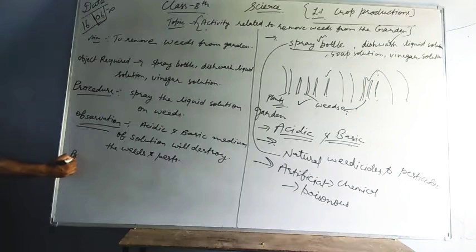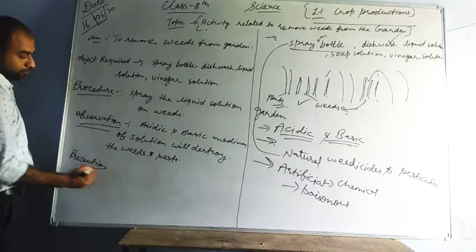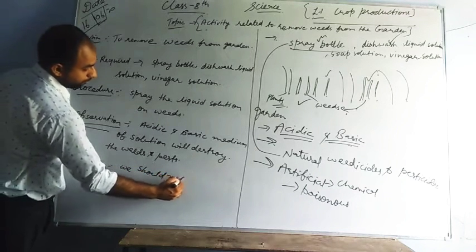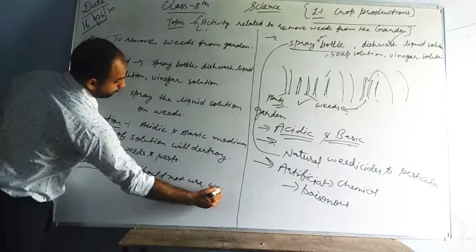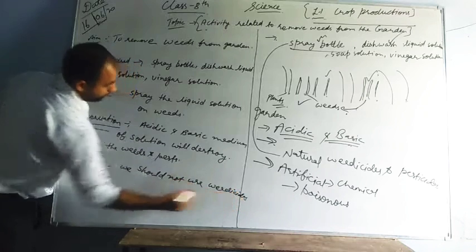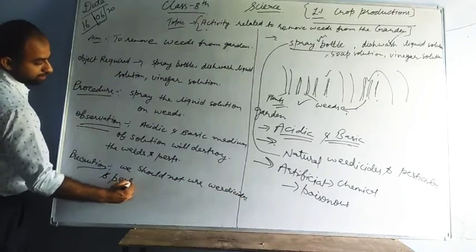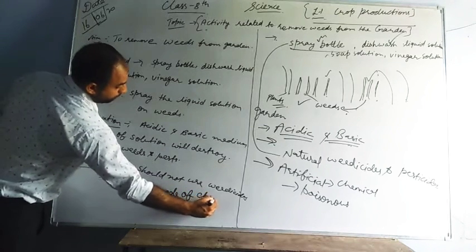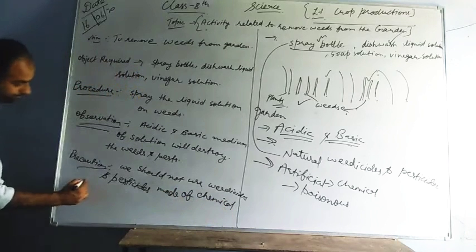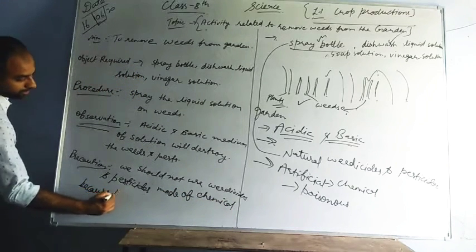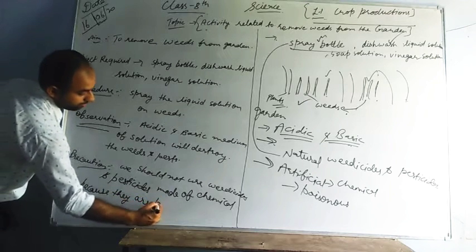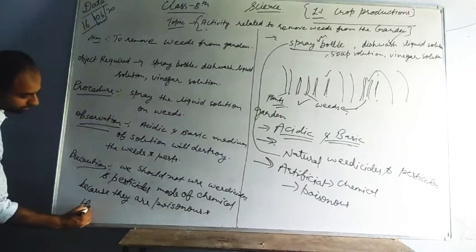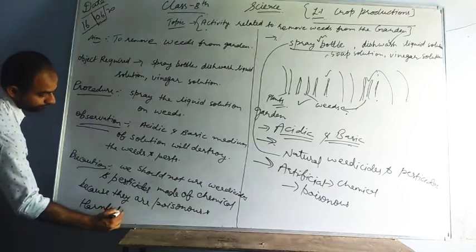Precautions: We should not use weedicides and pesticides made of chemicals, because they are poisonous and harmful in nature.